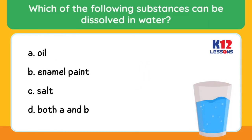Which of the following substances can be dissolved in water? A. Oil. B. Enamel paint. C. Salt. D. Both A and B.